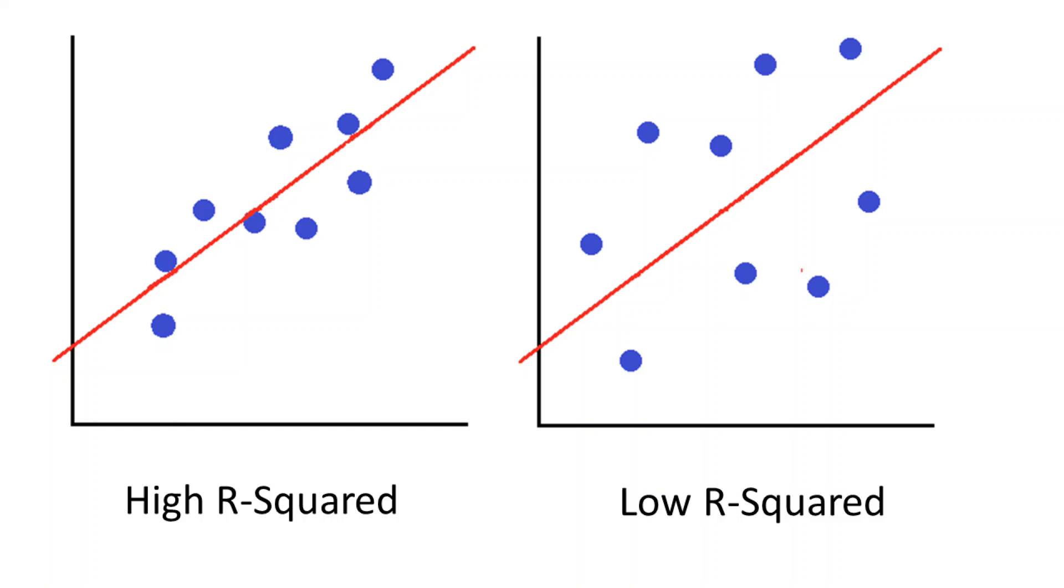For those of you who have watched the previous video, the phrase proportion of the variance might ring a bell. Proportion of the variance is the same thing as the coefficient of determination which is measured by R squared. R squared can be thought of as how closely the values or likelihood of a trait for all individuals in the sample hug the mean.